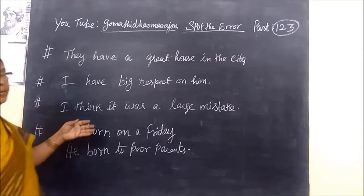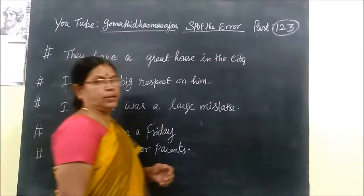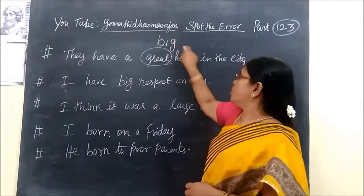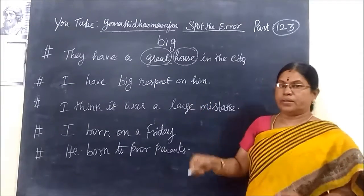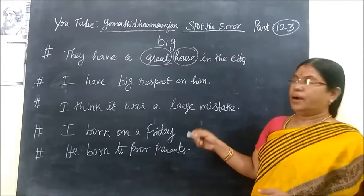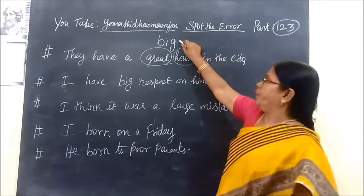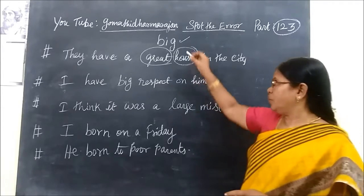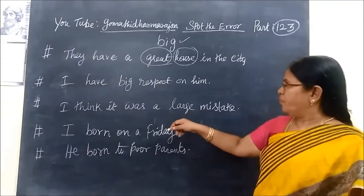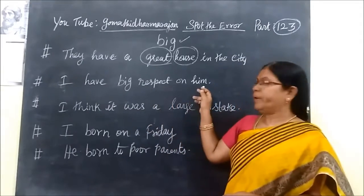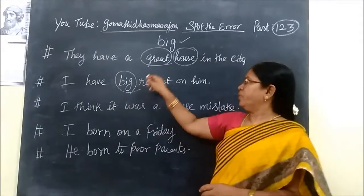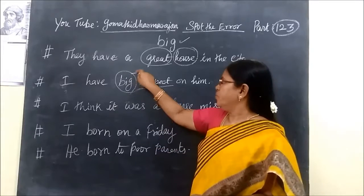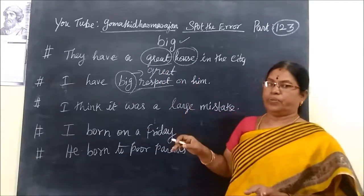Coming to the next sentence: 'They have a great house in the city.' Here 'house' is a noun - a countable, tangible object - so you use 'big.' We are using the adjective 'big' for physical things: a big house. But 'I have big respect for him' is wrong - 'respect' is an abstract noun, so you use 'great': 'I have great respect for him.'